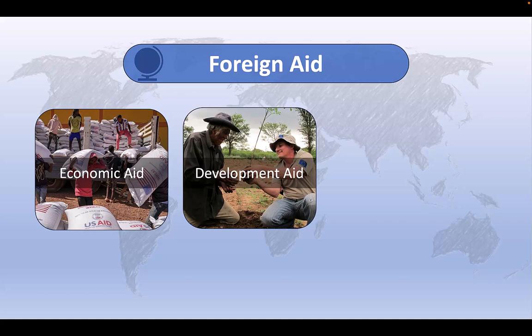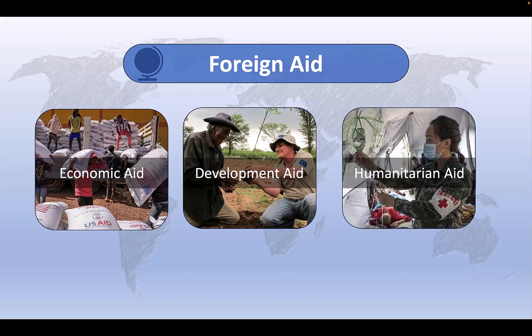ODA can involve the transfer of financial resources, capacity building programs, and policy advice, technical assistance to support areas like education, health care, government, institutional reforms, poverty reduction, environmental sustainability, and so on. Humanitarian aid focuses on providing immediate assistance to alleviate suffering of populations affected by natural disasters, conflict, or other emergencies. It usually includes provision of food, water, shelter, medical supplies, and emergency relief services, though the provision of monetary aid in support of post-disaster recovery efforts is also critical. Humanitarian aid aims to save lives, alleviate suffering, and protect vulnerable populations.